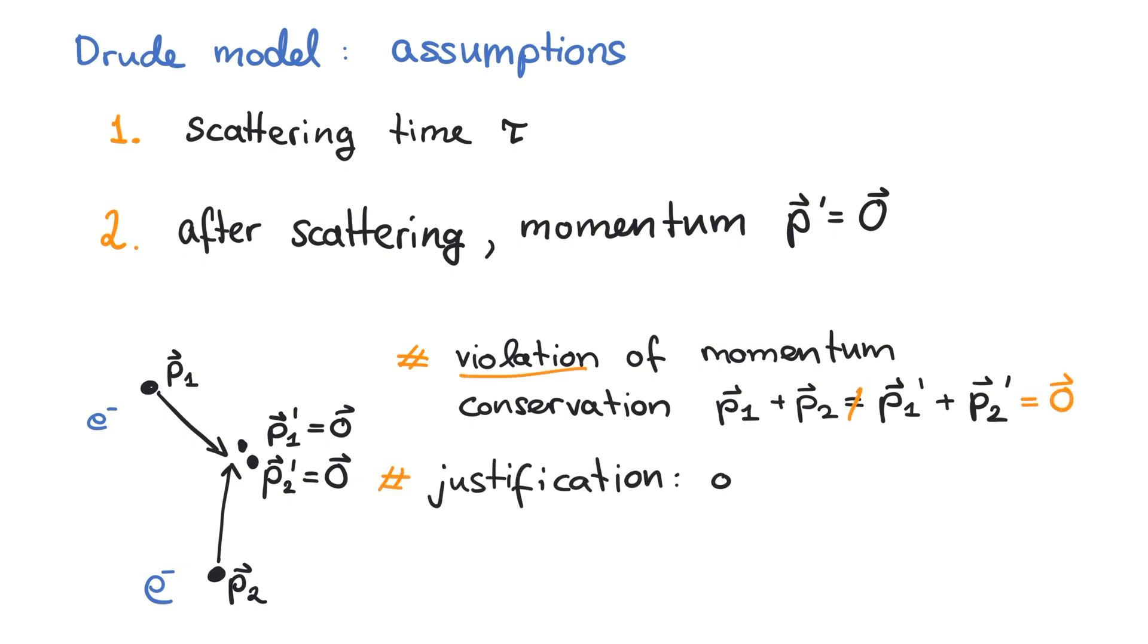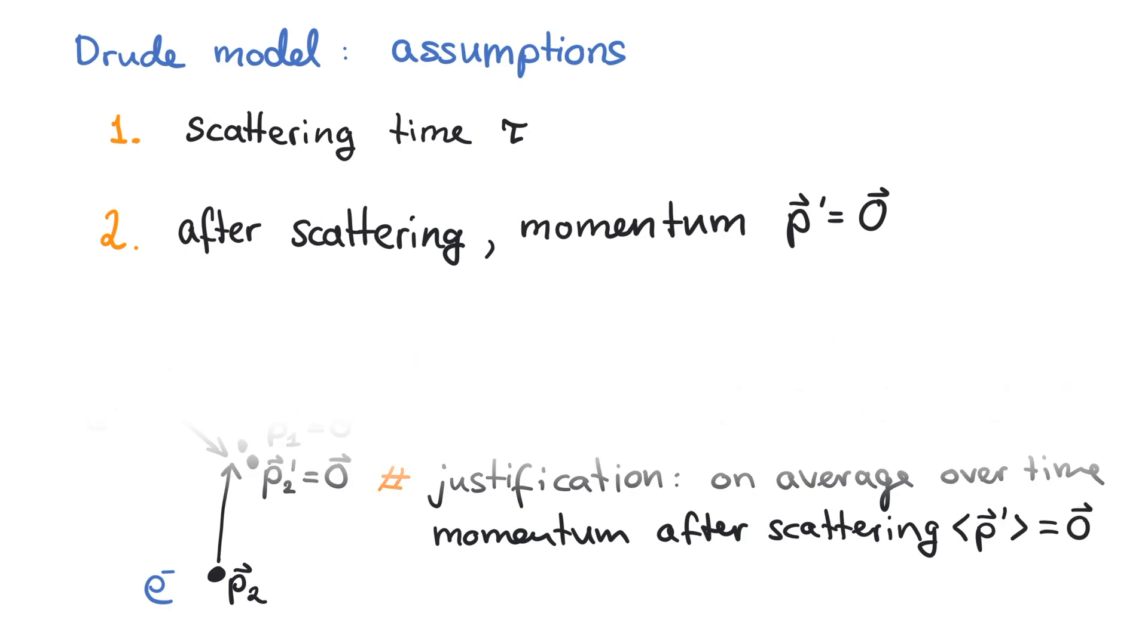But on average, when we take the mean over a period of time, it will be zero, because clearly it would be averaged over all kinds of directions.